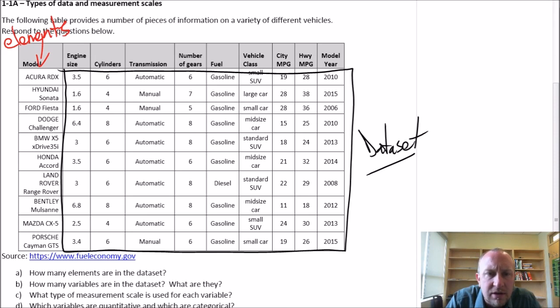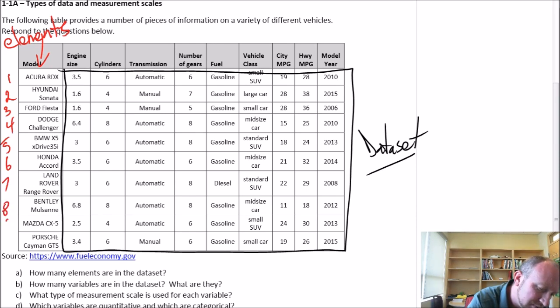So here we can address part A, how many elements are in the data set. So the number of elements, let's see I have one, two, three, four, five, six, seven, eight, nine, and ten. So here I have 10 elements in this data set.